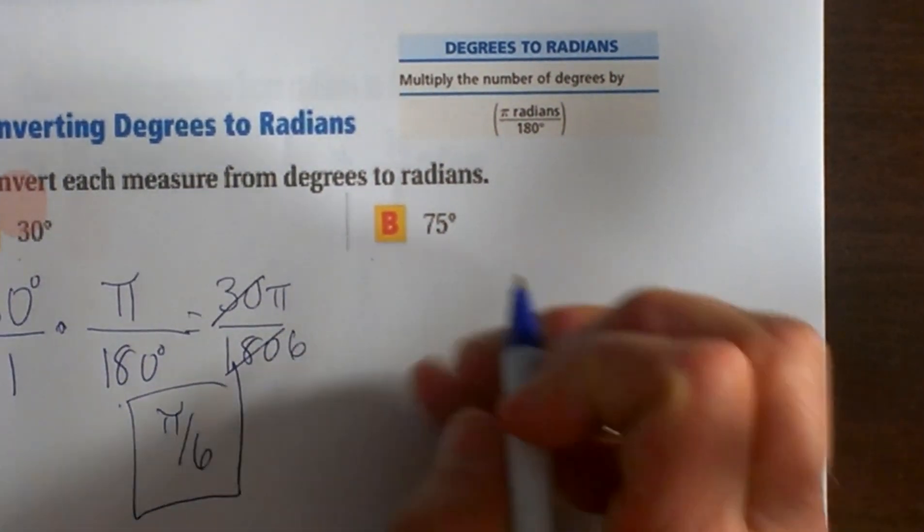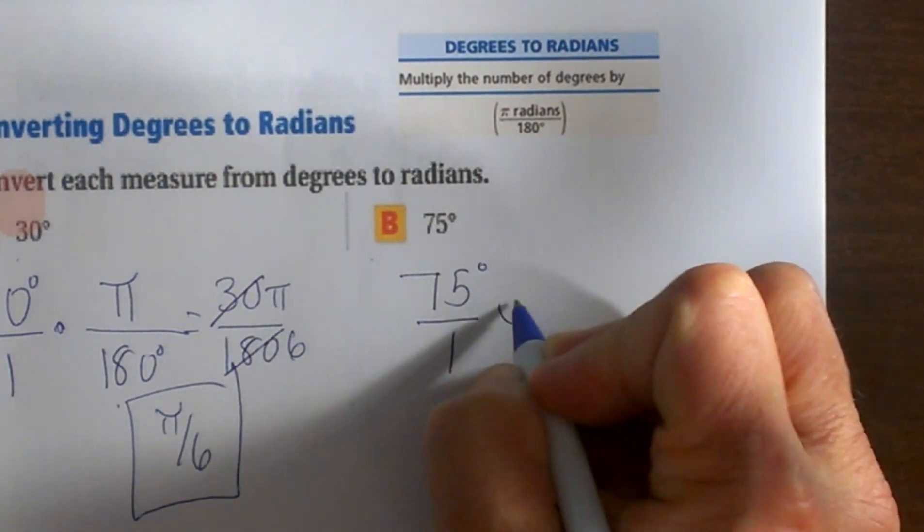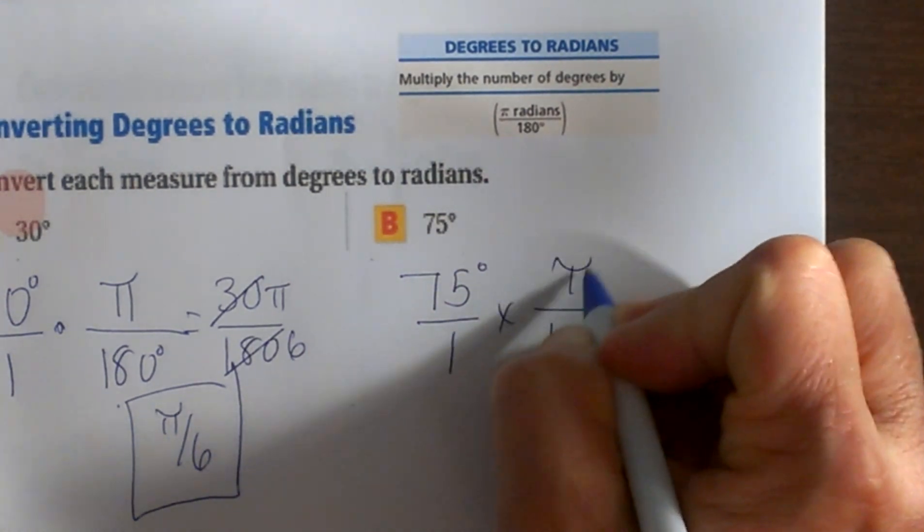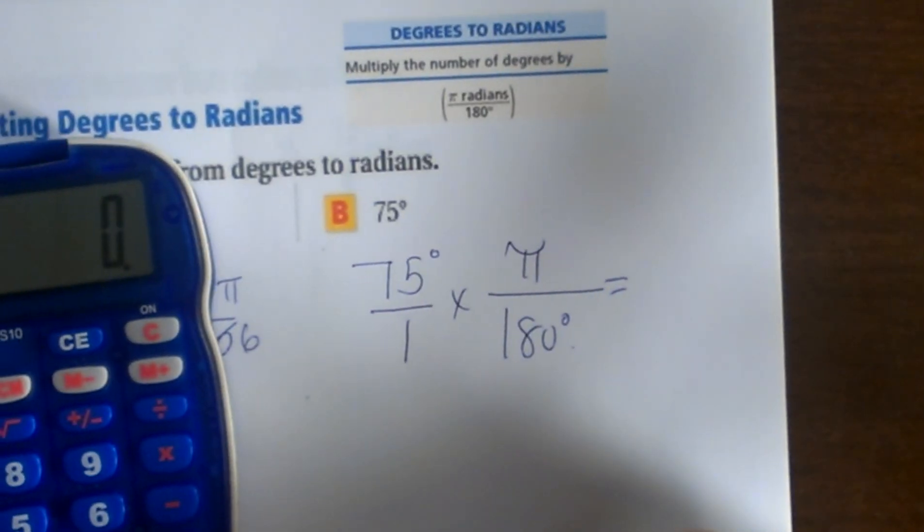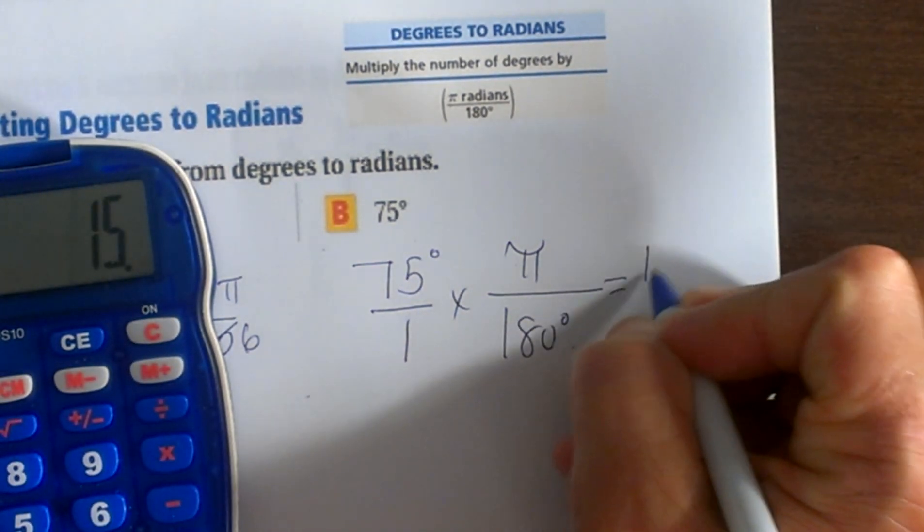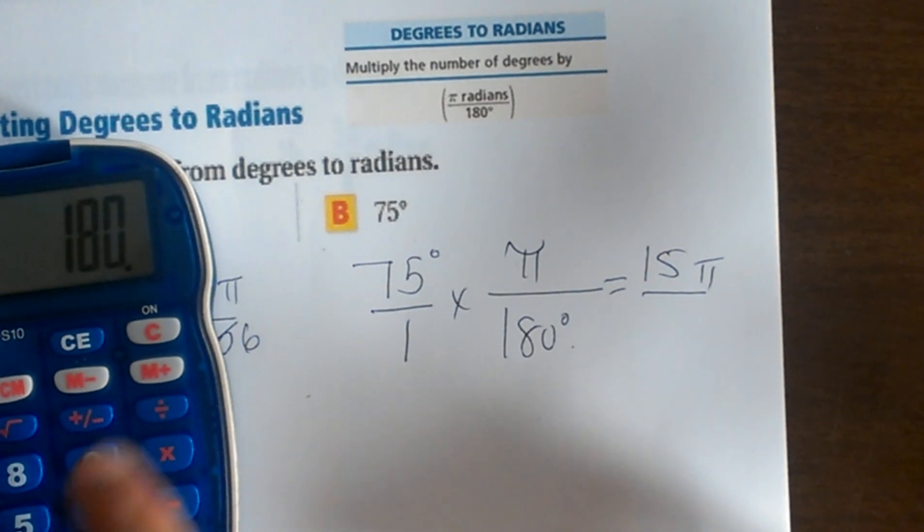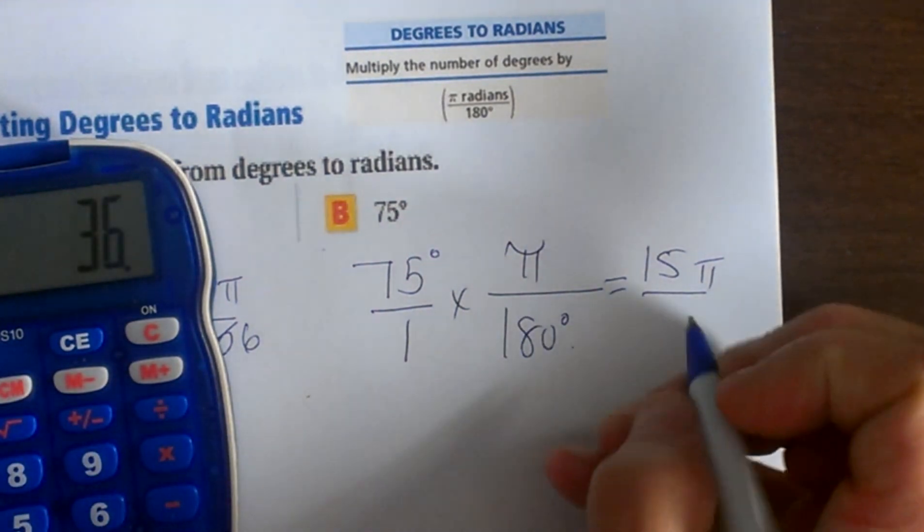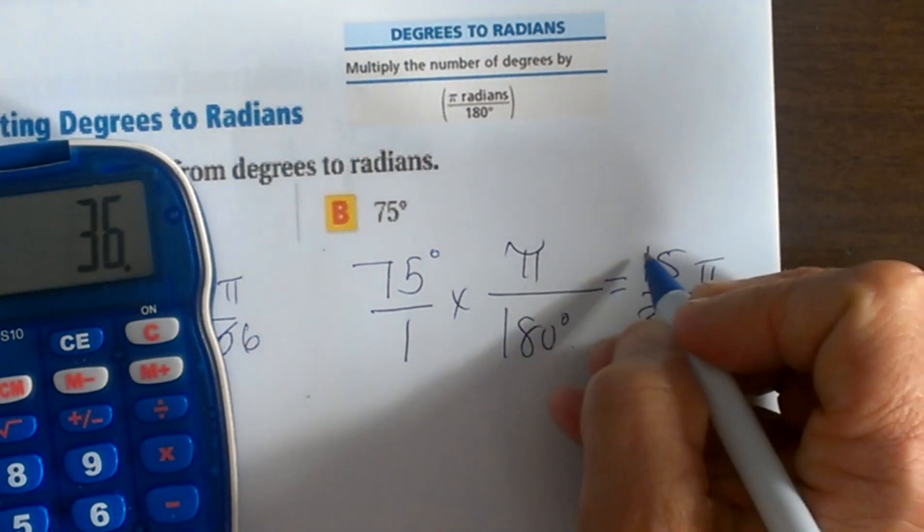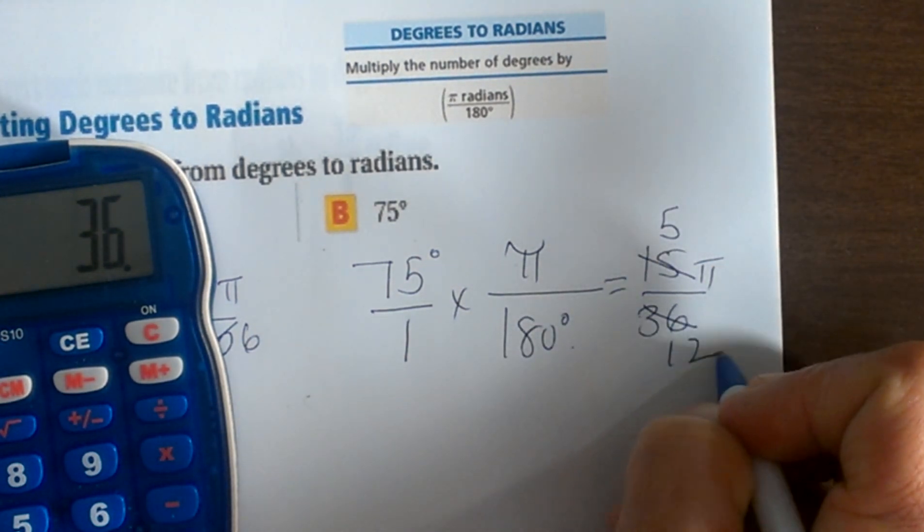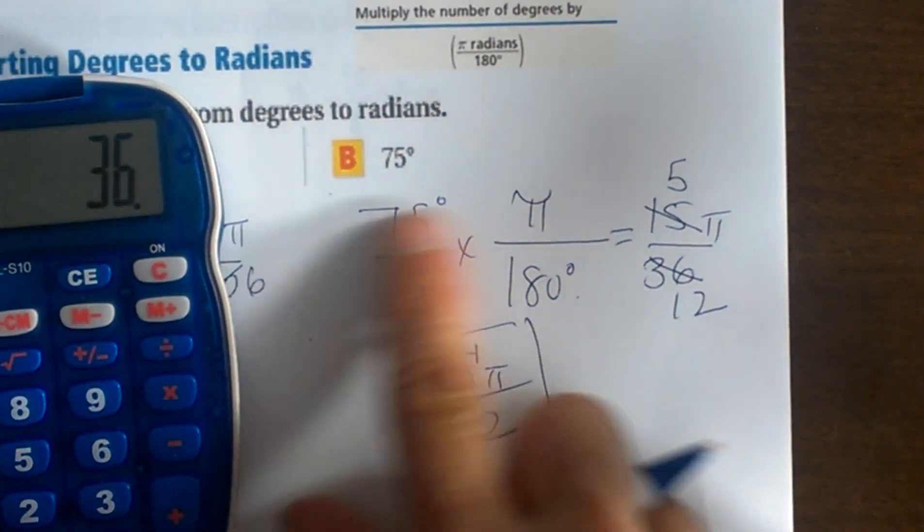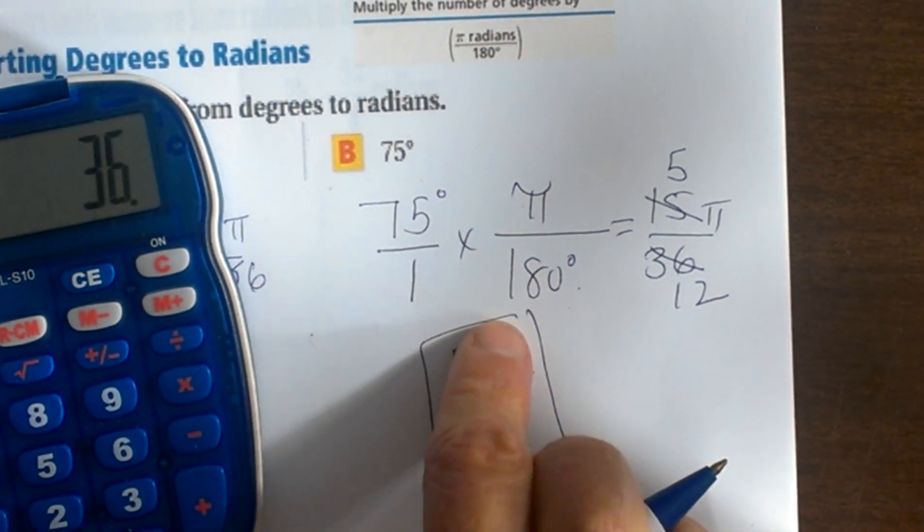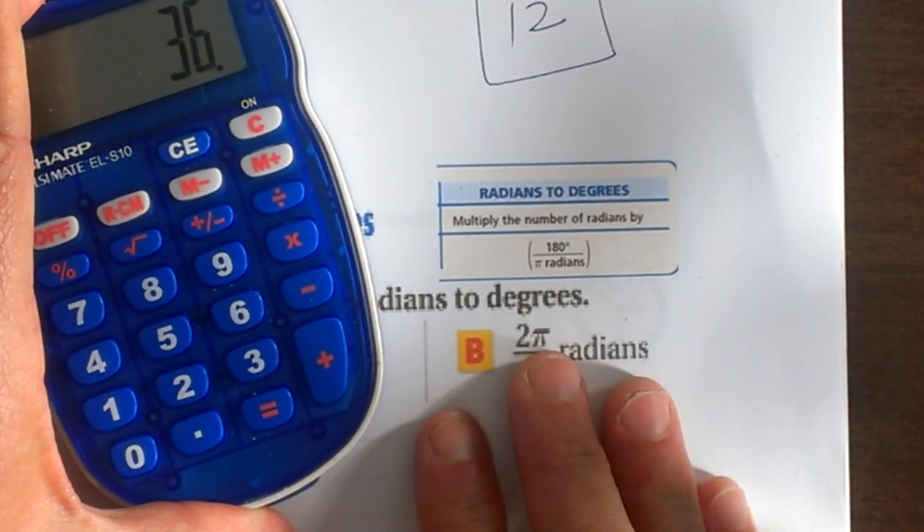For 75 degrees, do 75 over 1 times π over 180. This one's not quite as simple. I know 75 is divisible by 5, that's 15. So that gives 15π over 36. It still reduces by 3, so take a 3 out—that gives 5, and 3 out of 36 gives 12. So that's 5π/12 in radian measure.